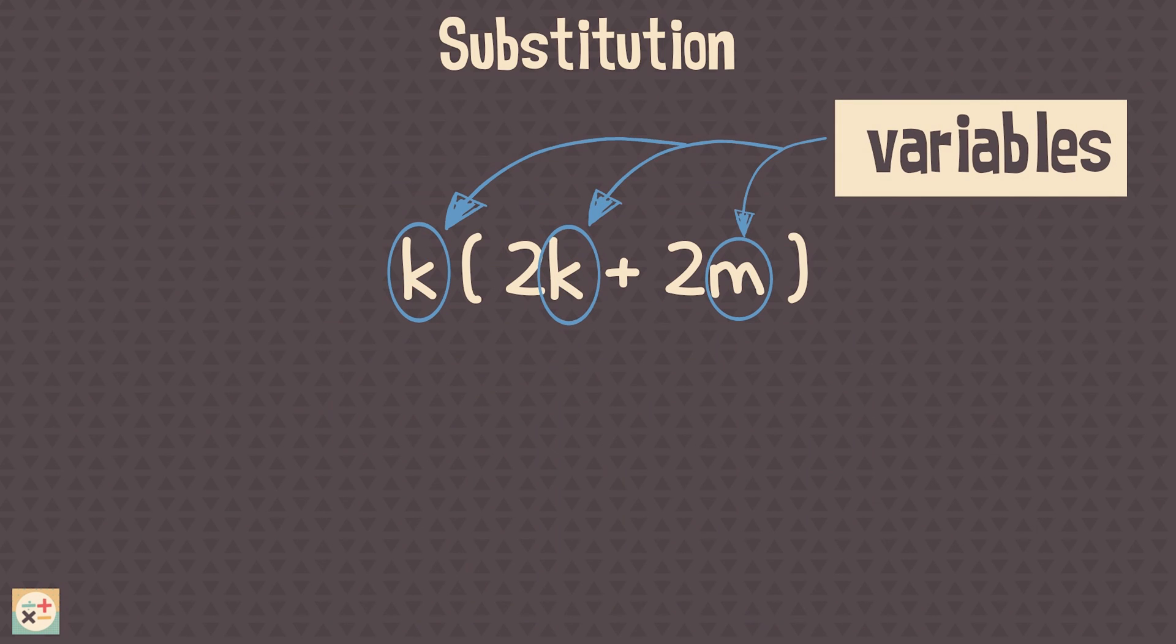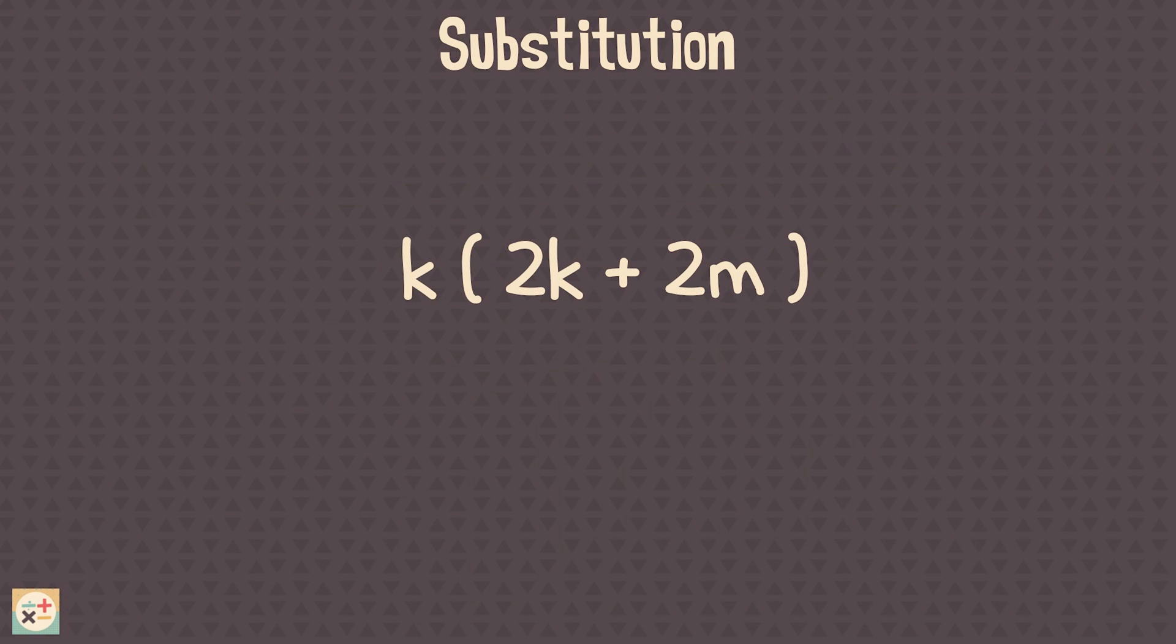This next example includes two variables, and one of the variables, K, appears twice. Let's look at how to evaluate this.